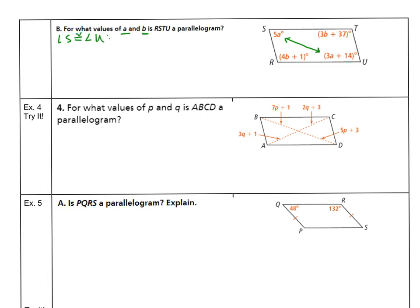So angle S should be congruent to angle U. And that means 5A would be equal to 3A plus 14. To get A by itself, let's move the 3A over to the left. And that gives us 2A equals 14. Last but not least, to get A by itself, let's divide both sides by 2. To make angle S congruent to angle U, that lowercase a would have to equal 7.